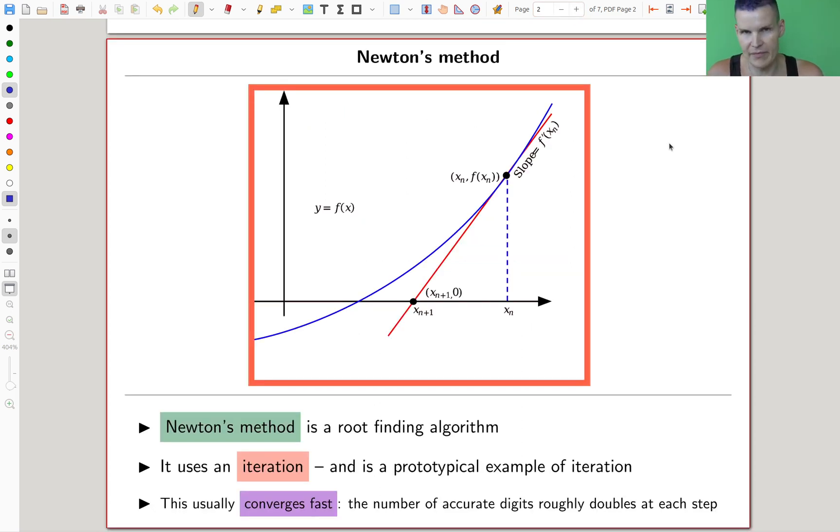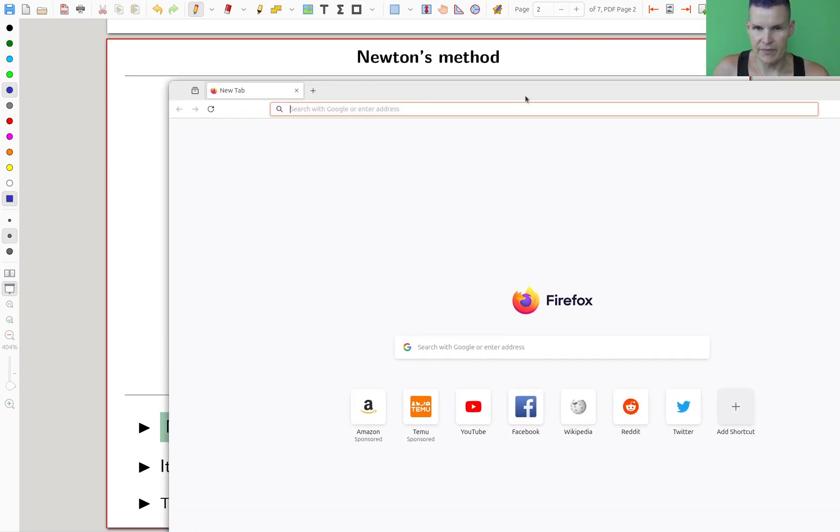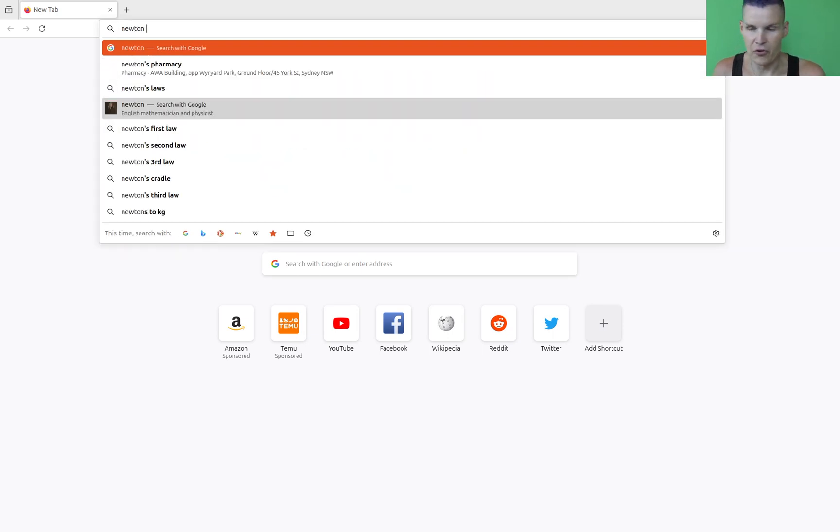Okay, so kind of the standard iteration method, or the prototypical iteration method, is Newton's method. Instead of explaining it in formulas, I will just open Google and show you an animation in a second. So Newton's method is a root-finding method, and it's kind of the prototypical example of an iteration. And even better, it converges fast. The accuracy kind of doubles with the number of steps. So it's pretty good. Let's now have a look whether we can actually understand what Newton's method is.